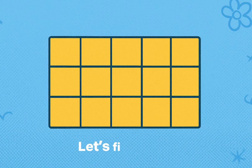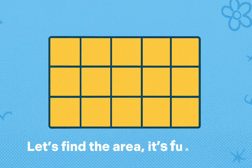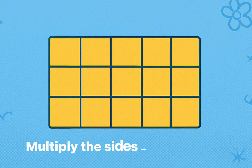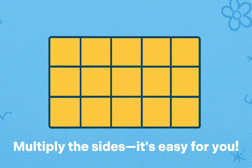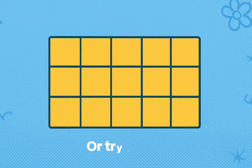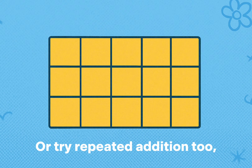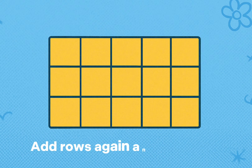Let's find the area, it's fun to do. Multiply the sides, it's easy for you. Or try repeated addition too — add rows again and again, it's true.